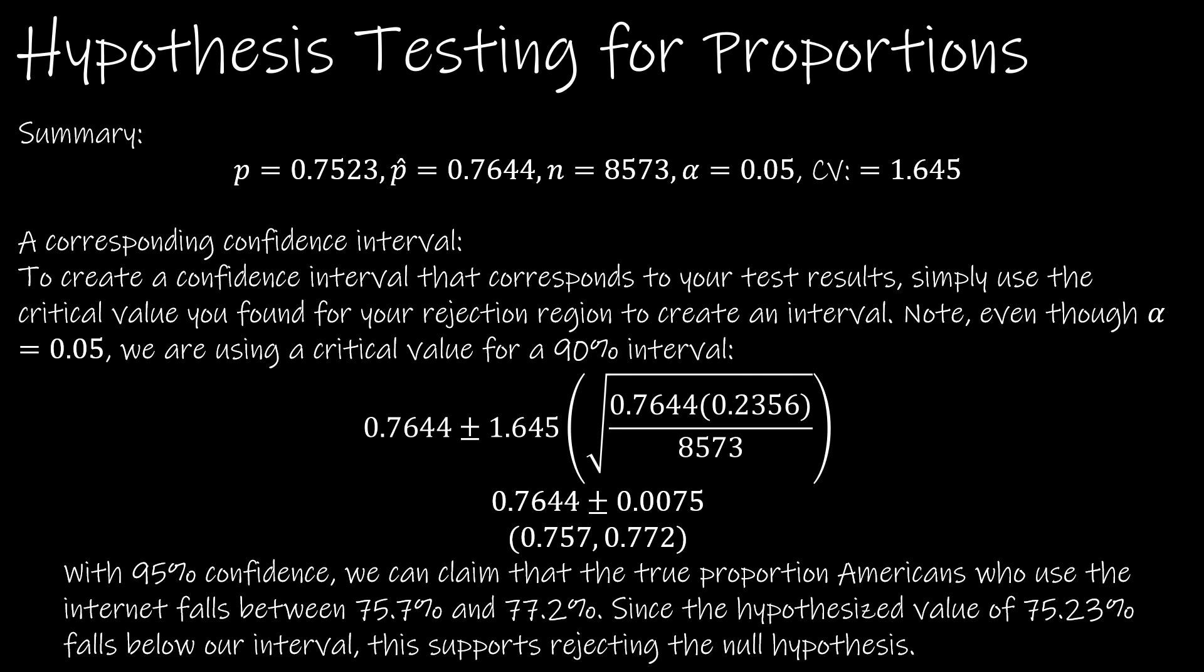Finding a corresponding confidence interval has everything to do with that critical value. I'm just plugging everything in to create that interval. Remember, we rejected the null, therefore our p-value should not be in this interval. If you'll notice, 0.7523 is actually less than our interval, which is how it should be, because we think the percentage is greater. This tells us that it is greater because both of those values are greater.